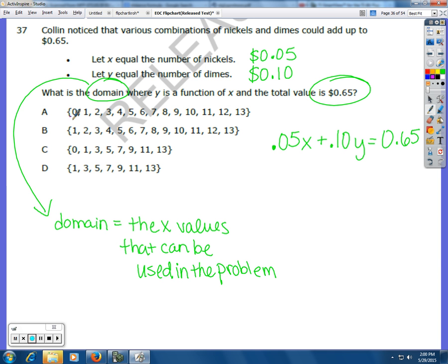So for example, if you look at A, the first one that they want to plug in is 0. So if we plugged in 0 for X, think about it. If we plugged in 0 for X, this would go away, right? And then you would have 0.10 times Y equals 65. That would not be possible because dimes go up by 10 cents, and you're never going to get to the 5 here.